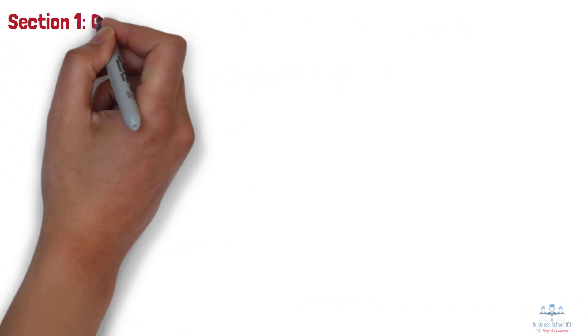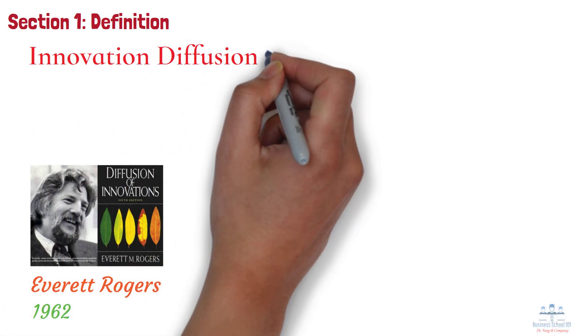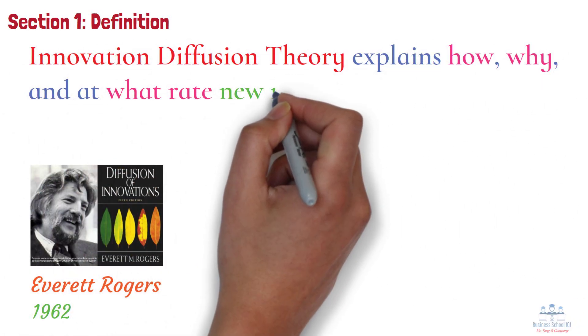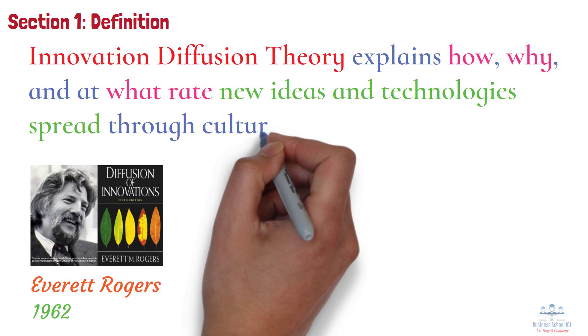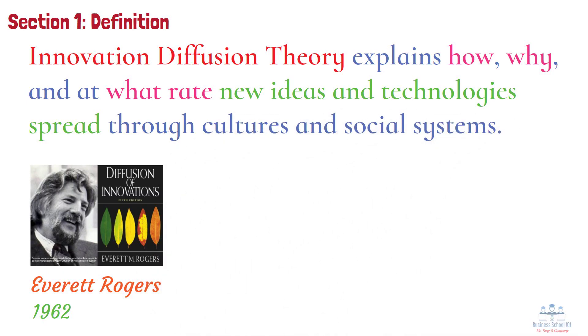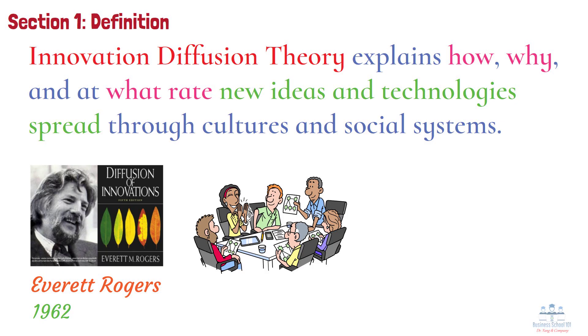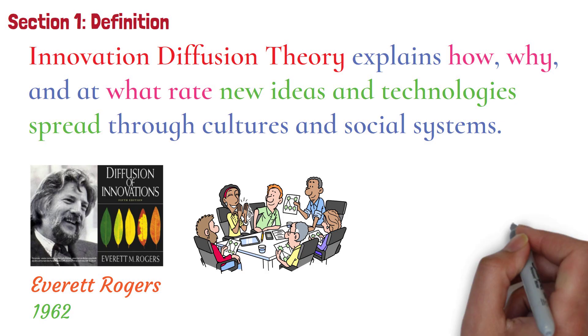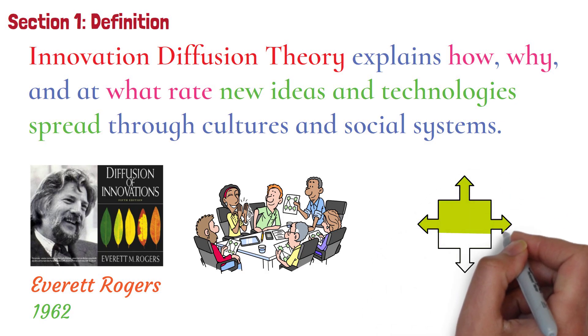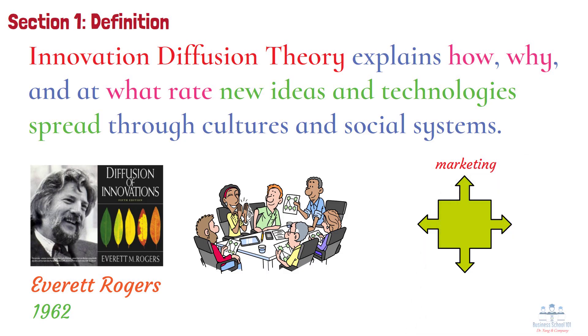Section 1: Definition. Innovation Diffusion Theory was introduced by American communication theorist and sociologist Everett Rogers in 1962. It explains how, why, and at what rate new ideas and technologies spread through cultures and social systems. In essence, it helps us understand how innovations gain traction and how different groups respond differently to change. This theory is widely used in marketing, product development, education, and public health.